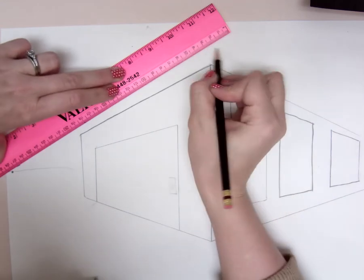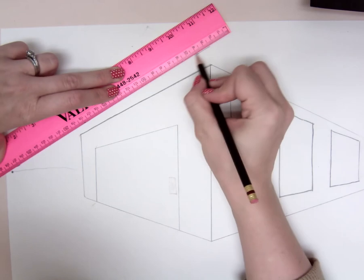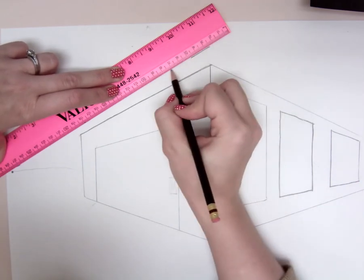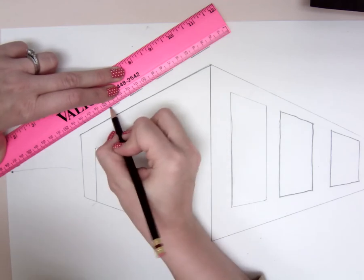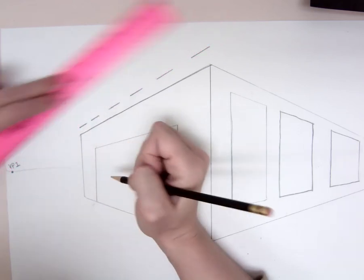Starting on the corner right here, you're going to draw dashes. So you're going to draw a dash, skip a space, dash, skip a space. Do that all the way down. Like that.